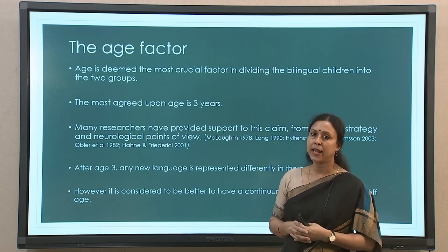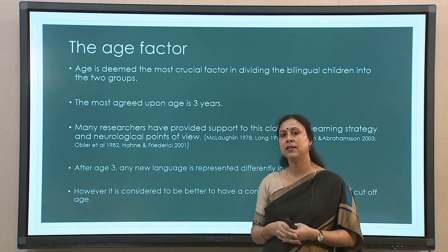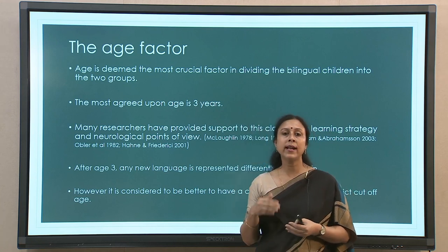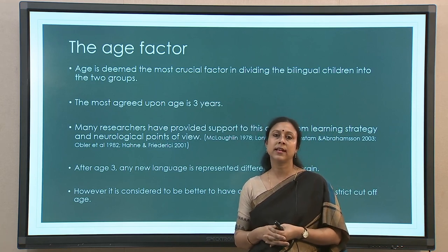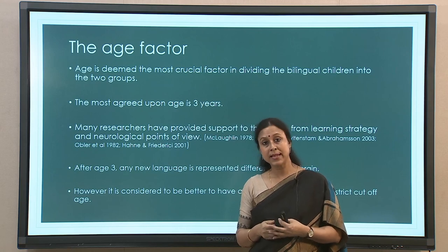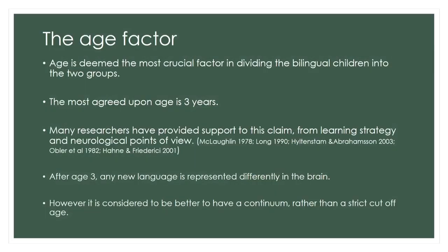Age becomes a very critical factor in deciding whether a child is a successive or simultaneous bilingual. Where exactly do you draw the line — what is the age bracket within which the second language should appear for the child to be called a simultaneous bilingual? This has not been easy and there have been many disagreements, but largely the agreement is that around age 3 should be the cutoff. Many researchers have provided data in support of this claim from various standpoints — one is the learning strategy, another is the neurological point of view. Learning strategies change over time in a child: until age 3 they use one sort of strategy, but after 3 apparently they use a different sort of strategy.